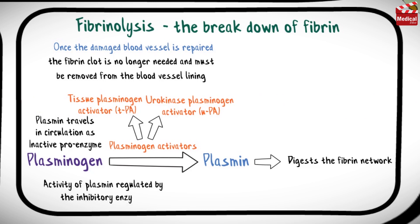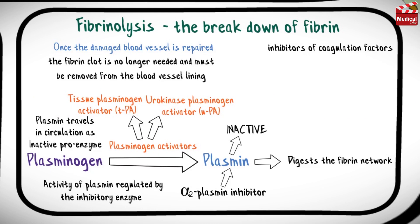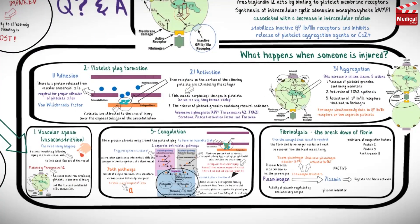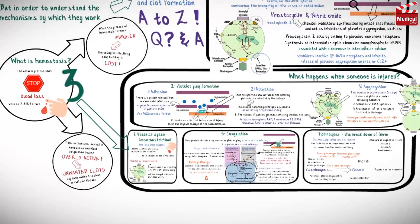The activity of plasmin is regulated by the inhibitory enzyme alpha-2-plasmin inhibitor, which rapidly inactivates it. There are also several inhibitors of coagulation factors, including protein C, protein S, and antithrombin 3.